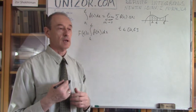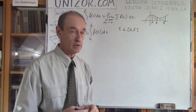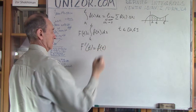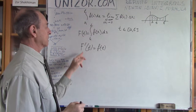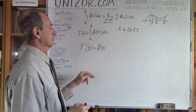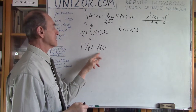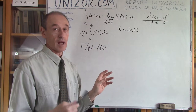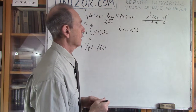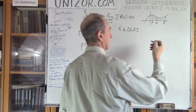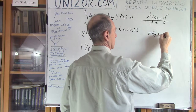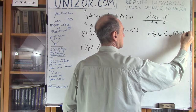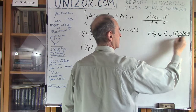The First Fundamental Theorem of Calculus states the following: the derivative of the function F(t), where t is the upper limit of this integral, is the same as the function f(t). Maybe at first it doesn't look obvious, but actually it is, and here is why. Let's think about what the derivative of F(t) is.